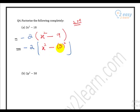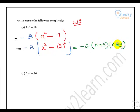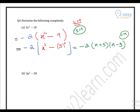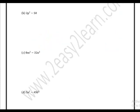We have a square term, a negative sign, and another square term, so we factorize further: 2(x plus 3)(x minus 3). That is the final answer for part a. Now part b: 2p squared minus 50.